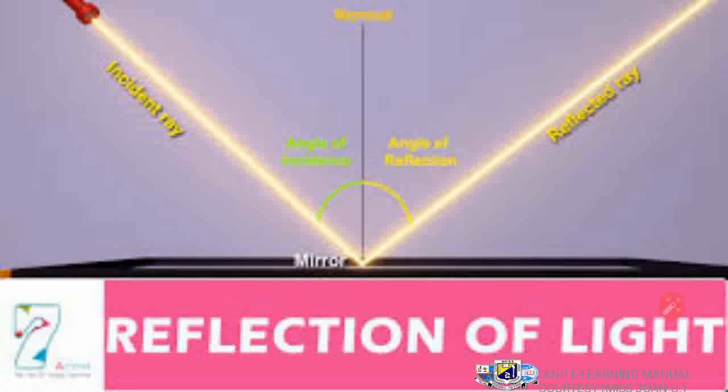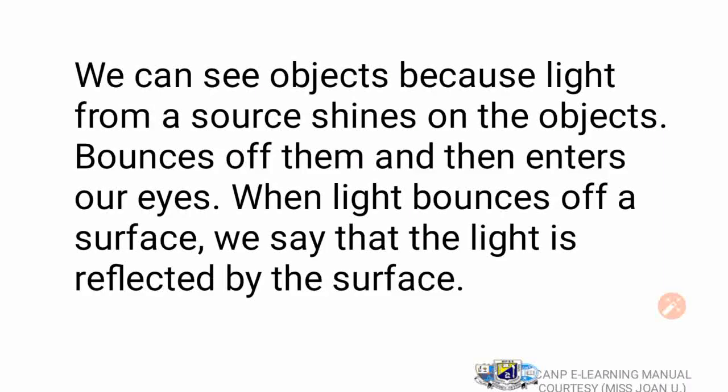We can see objects because light from a source shines on the object, bounces off them and then enters our eyes. When light passes off the surface, we see that the light is reflected by the surface. So you understand the concept of reflection — reflection has to do with light bouncing on a surface.